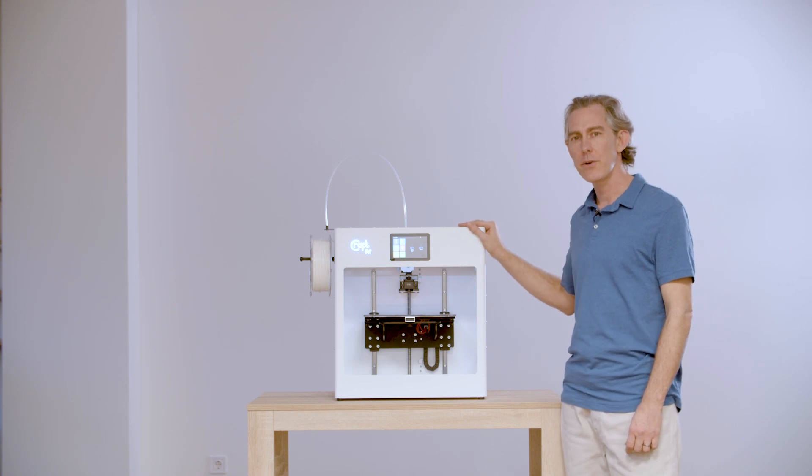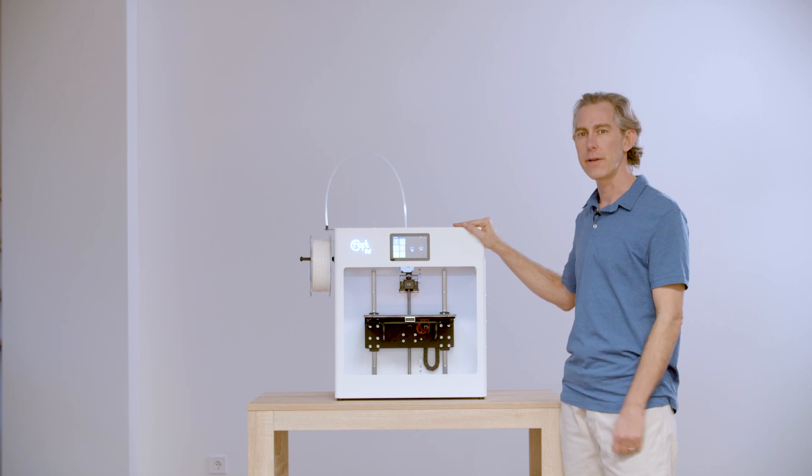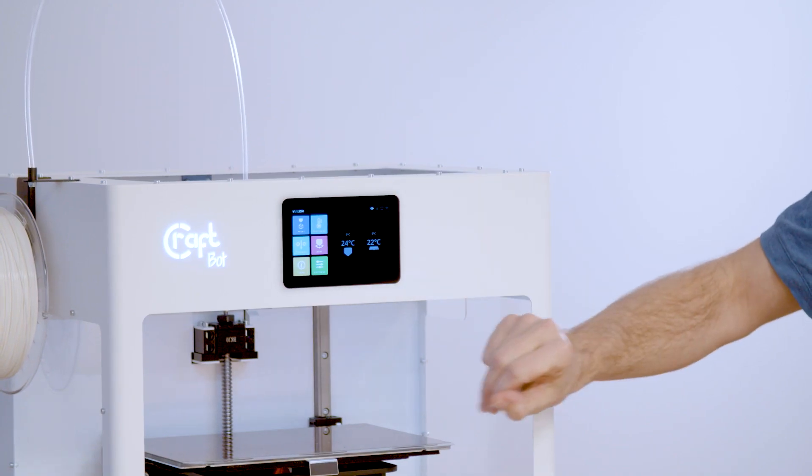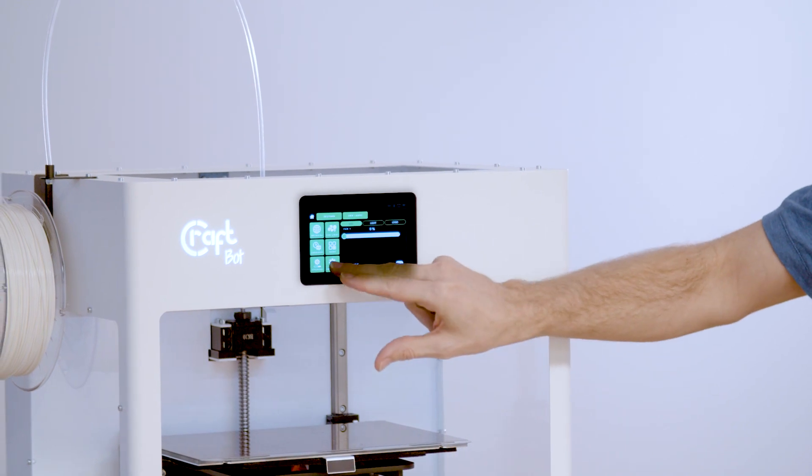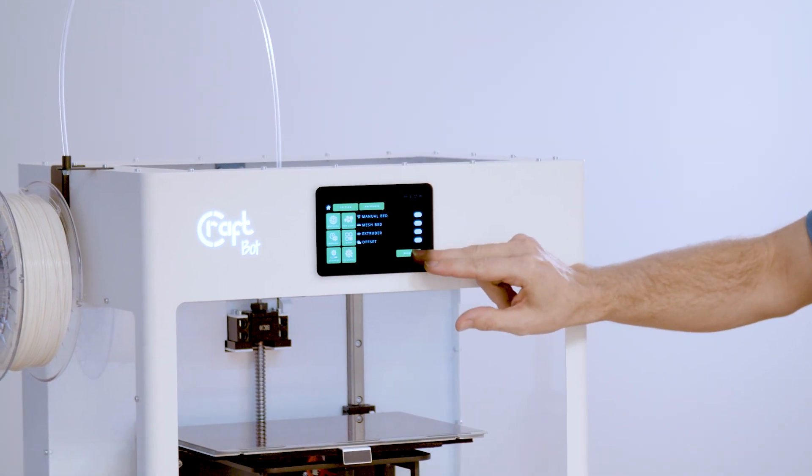Hi, today I'm going to walk you through the calibration wizard for our new CraftBot Flow generation single-headed printer. In order to get started, we're just going to click on the settings menu and then the calibrate button, and then we'll start the wizard.